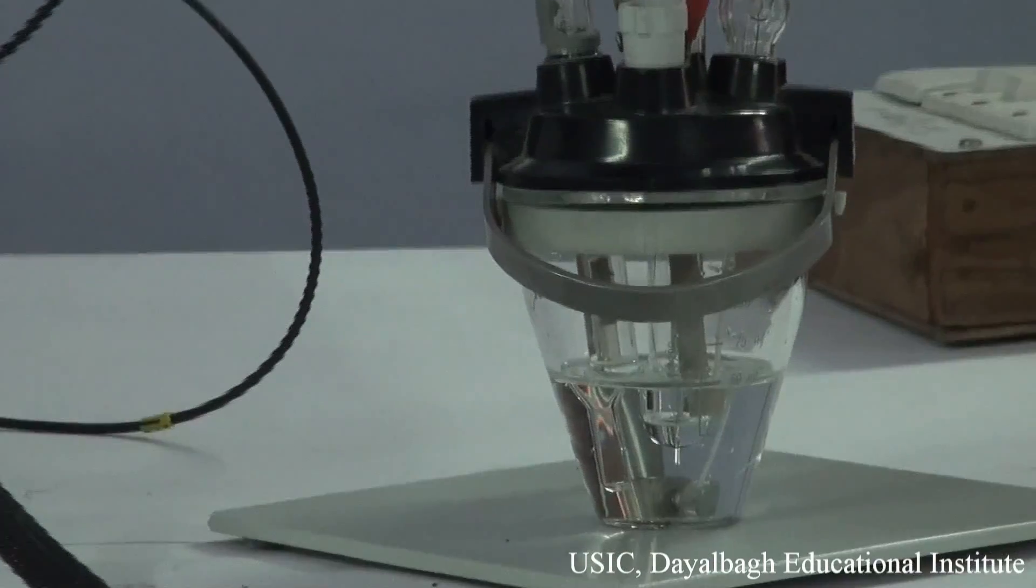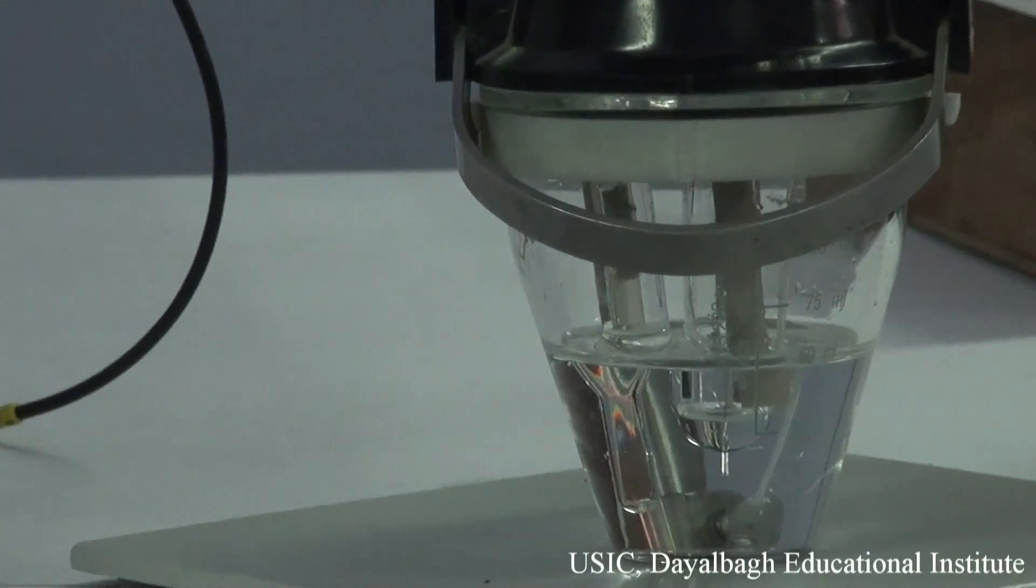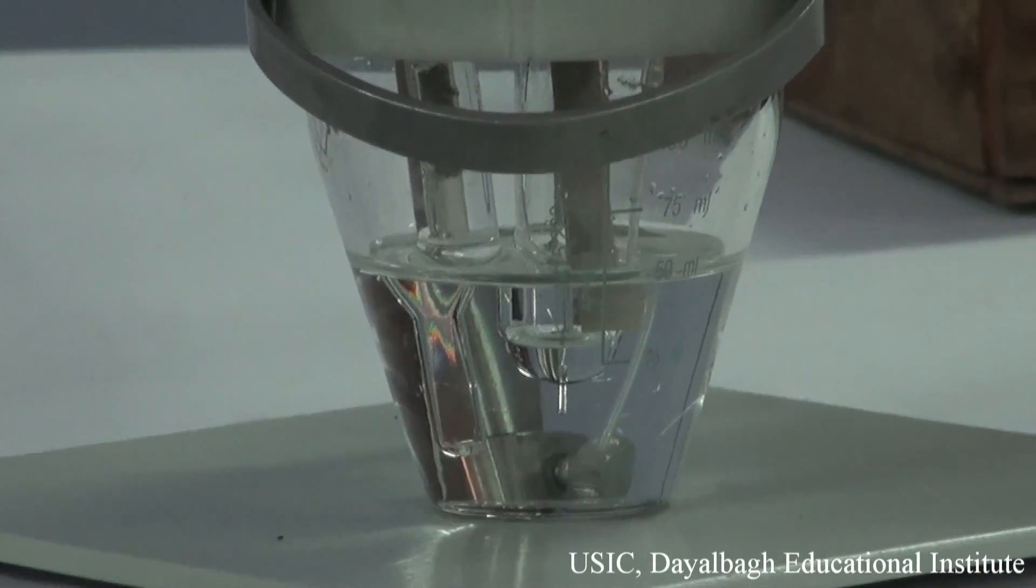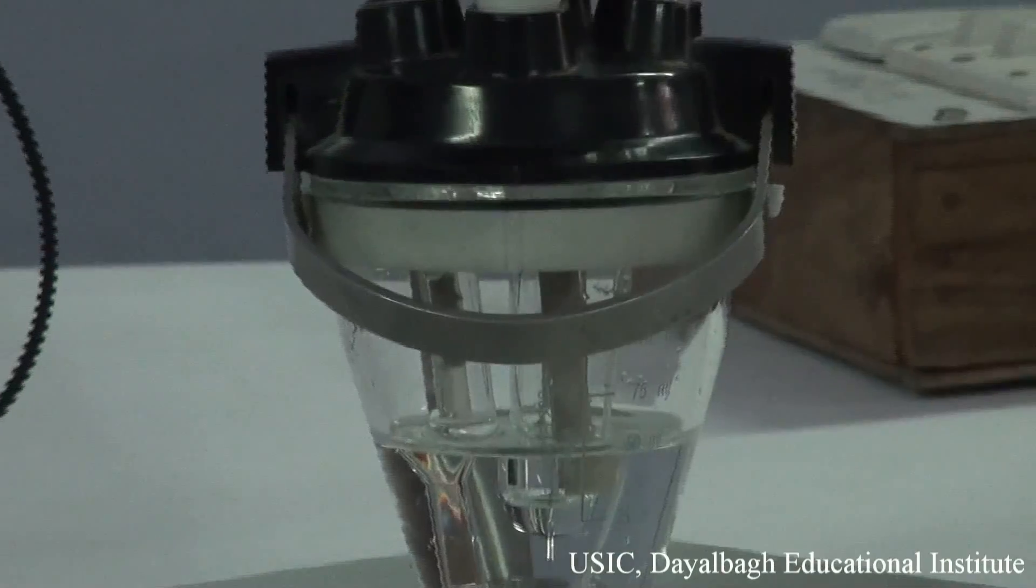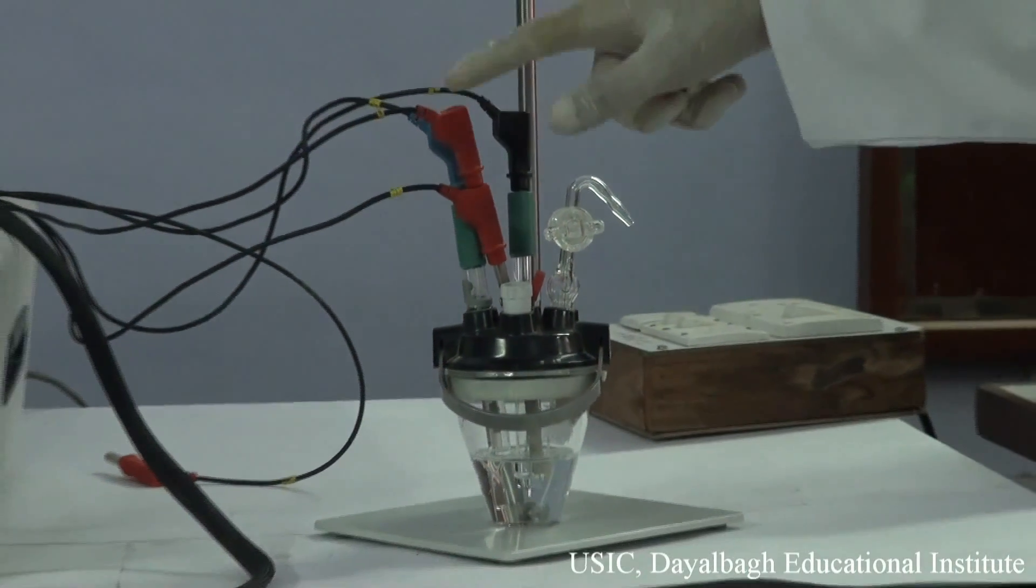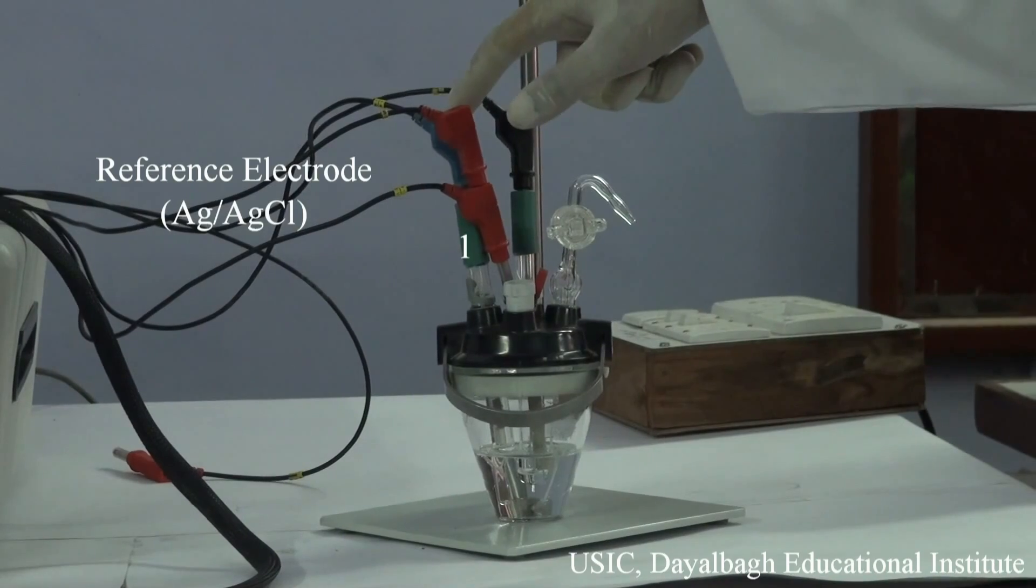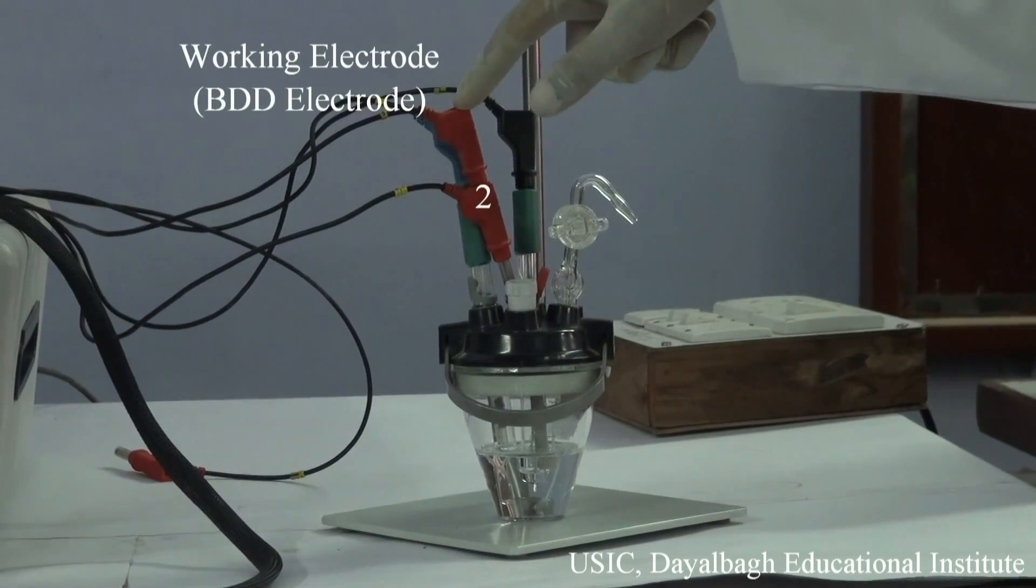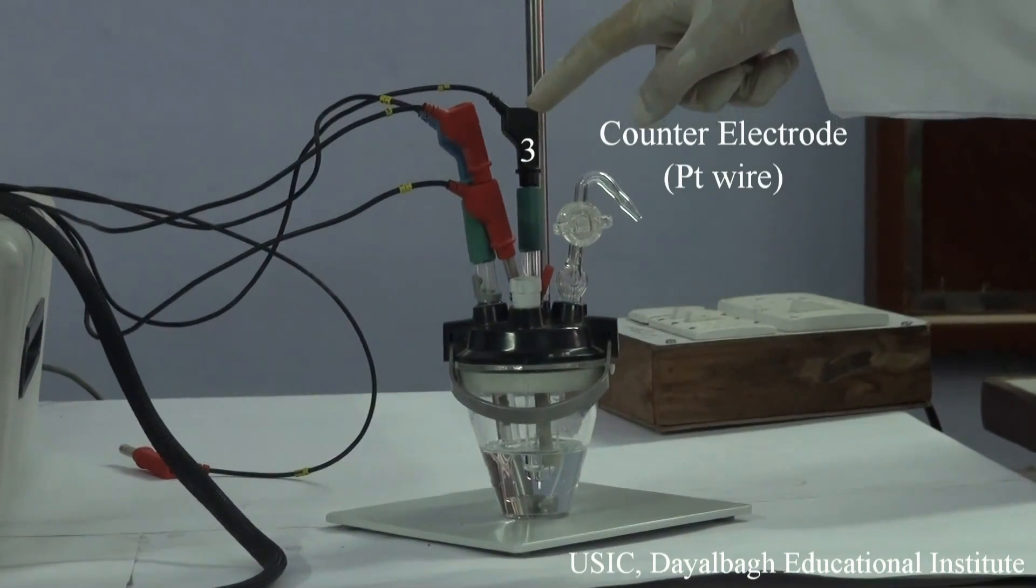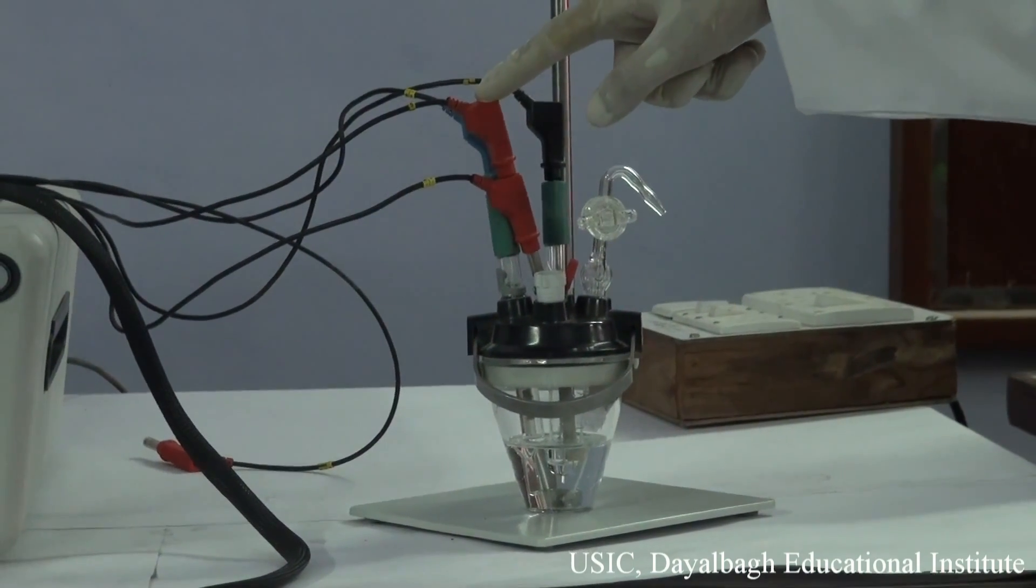Now, we can see the three electrode system. The reference electrode, that is silver-silver-chloride electrode. The counter electrode, that is platinum electrode. And the working electrode which we are using is boron-doped diamond electrode. This is the three electrode system where reference electrode will provide the potential to the boron-doped electrode, and this counter electrode will balance the current of the boron-doped electrode.